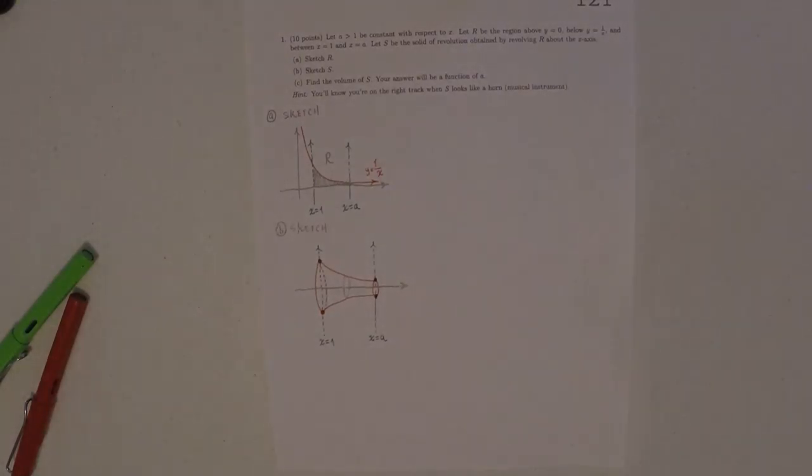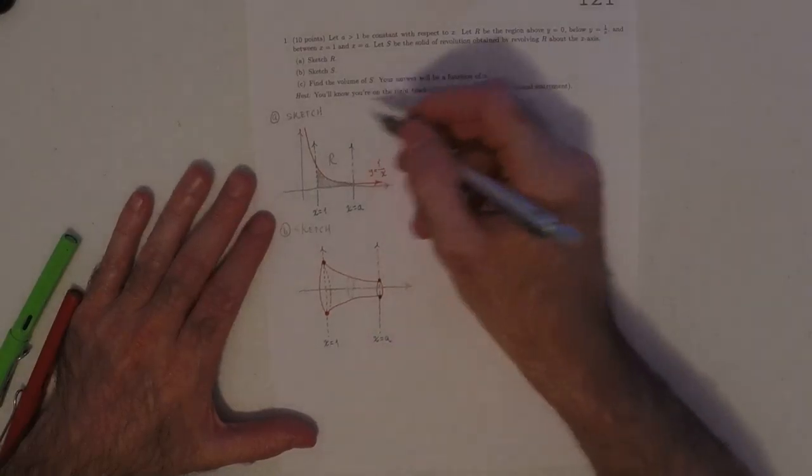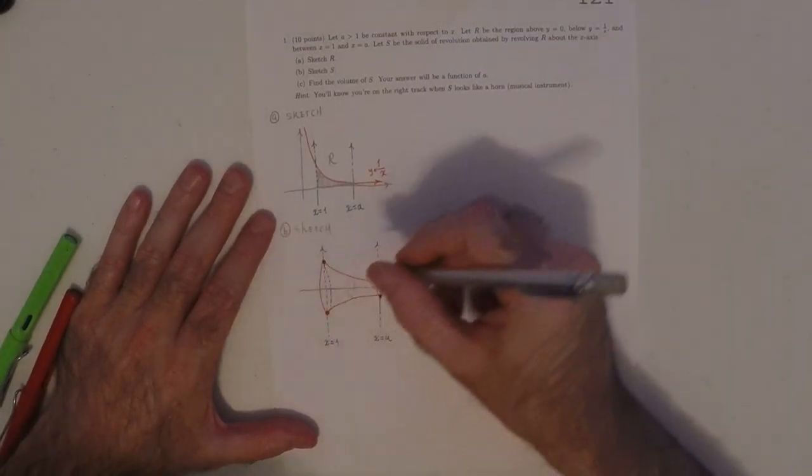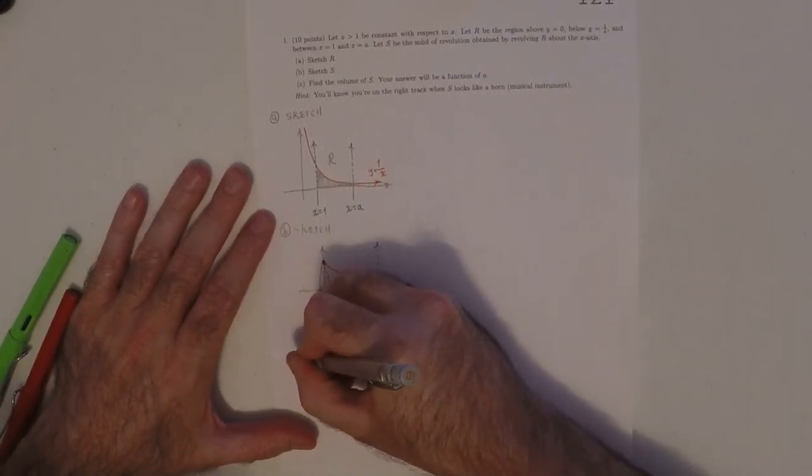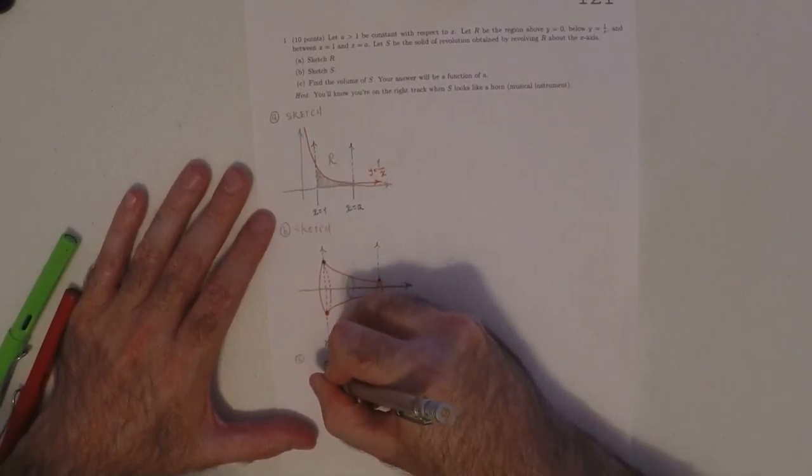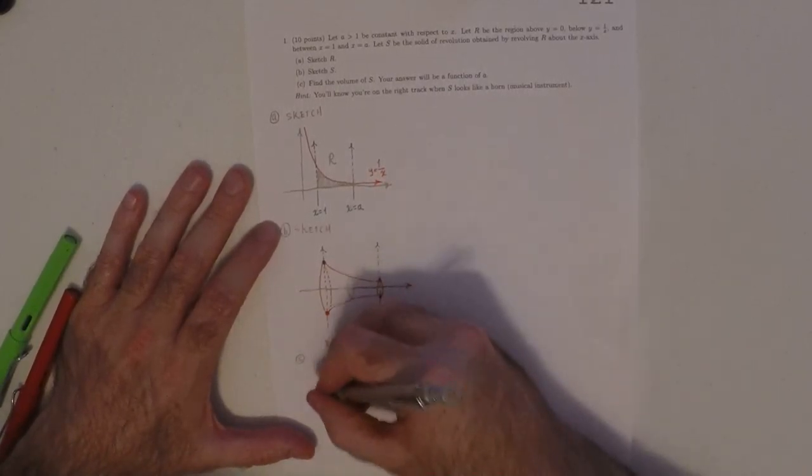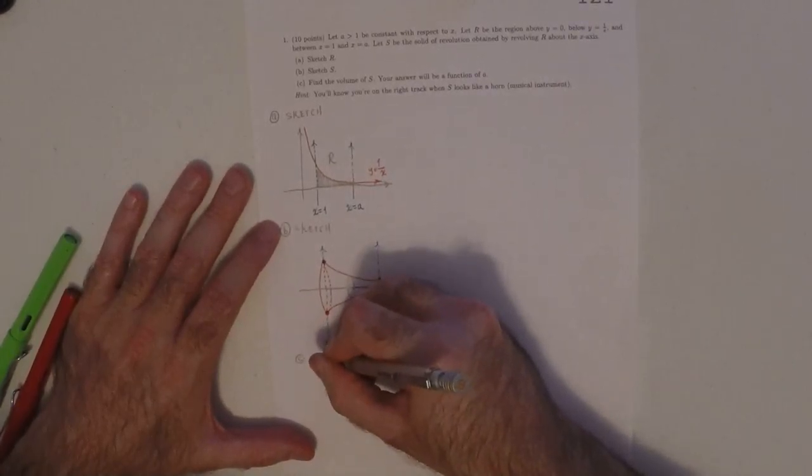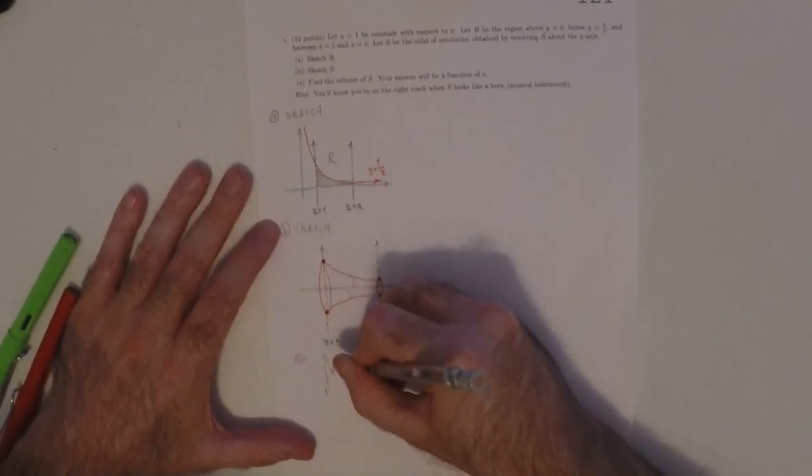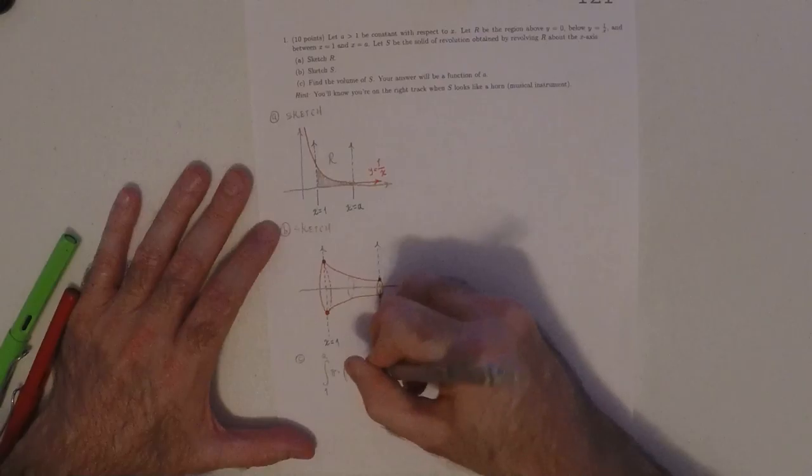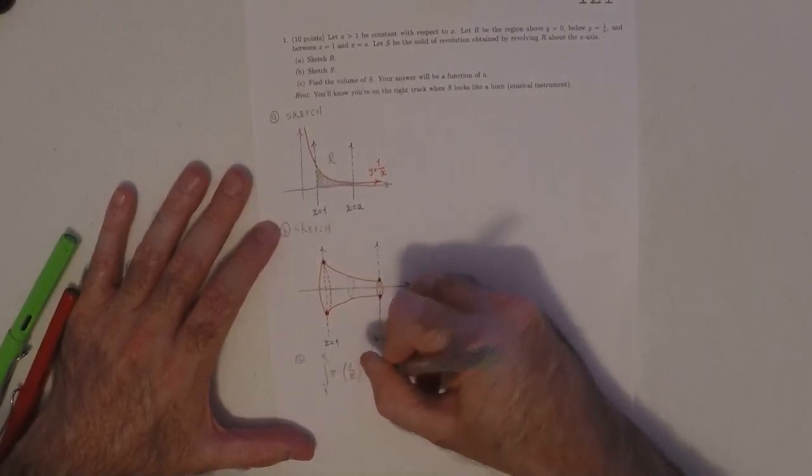Now the request is to find the volume, which will be a function of A, of parameter A. So then for C, the formula is the integral from 1 to A of pi times the radius squared times the height.